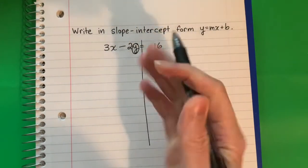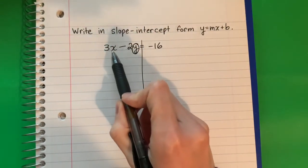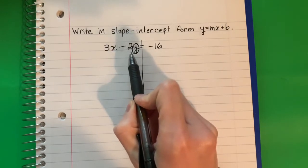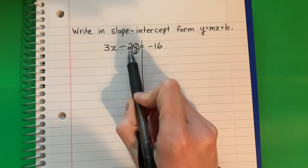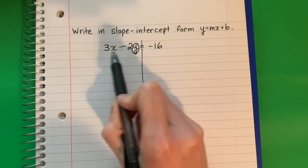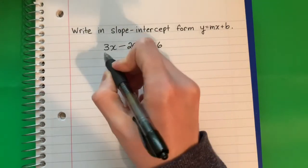So I have two things here on the left: 3x and negative 2y. Never move the number with y. Nunca mueve el número con el y. So the one that I'm going to move is the 3x.